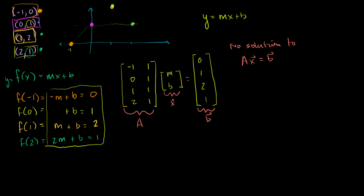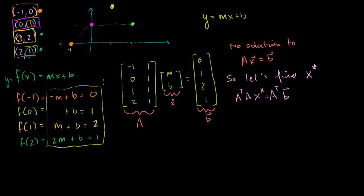Maybe we can find a least squares solution. So let's find our least squares solution such that A transpose A times our least squares solution equals A transpose times b — that's the equation our least squares solution satisfies, as we proved two videos ago. So let's figure out what A transpose A and A transpose b are. A transpose looks like this: the first row is [-1, 0, 1, 2] and the second row is [1, 1, 1, 1].